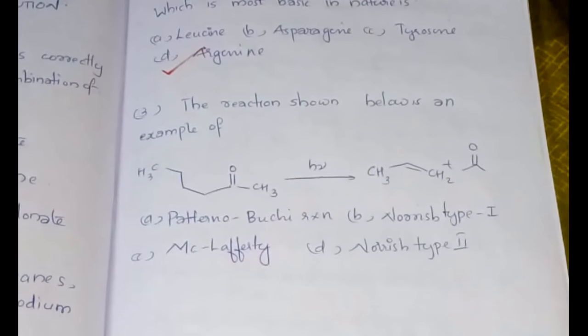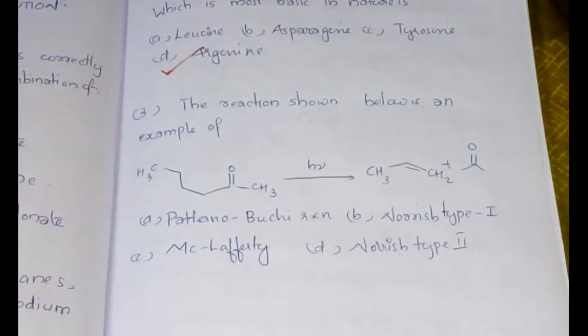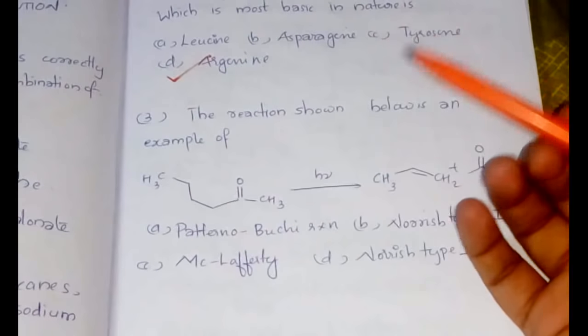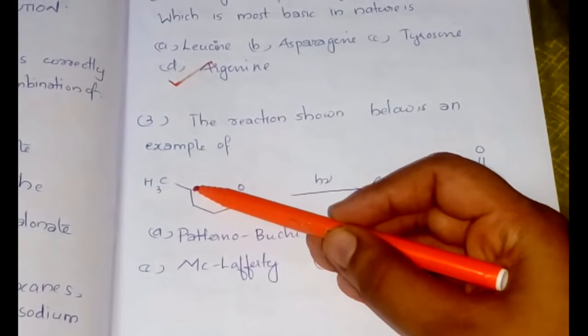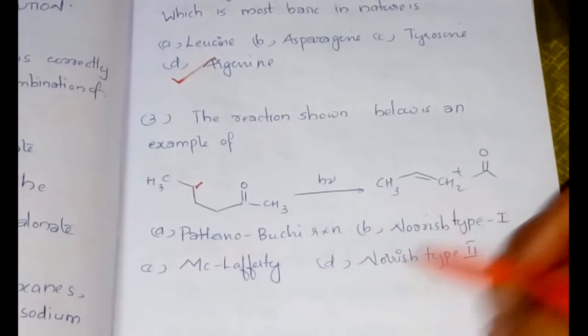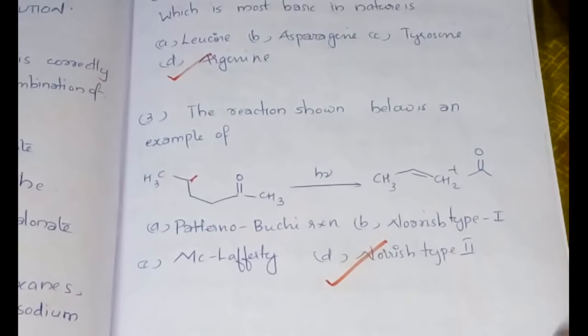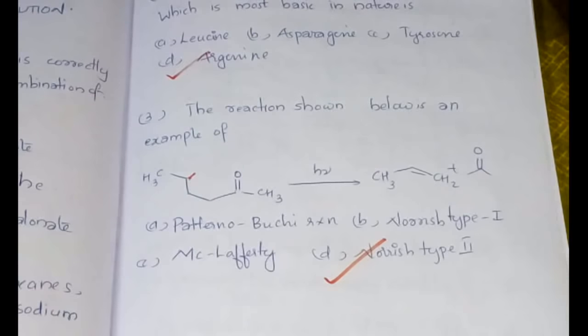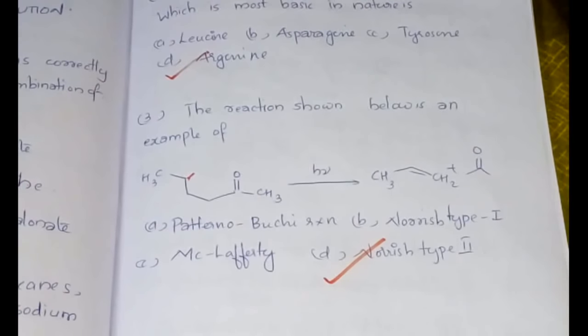The third question we have discussed in one of my videos from photochemistry. The reaction shown below is an example of: let us see whether there is a gamma hydrogen. There is alpha, beta, gamma—definitely there is a gamma hydrogen, and therefore this should be a Norrish type II. If you remember, in Norrish type 2 we can have three different types of products, one would be a ketone, the other would be an alkene, and the third one would be a different type of cyclic product.